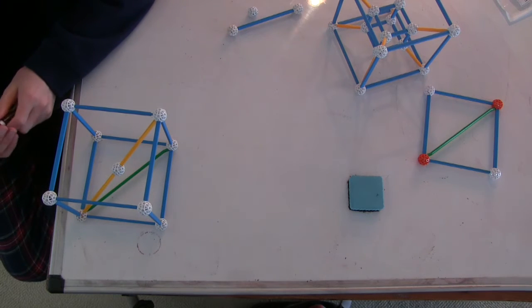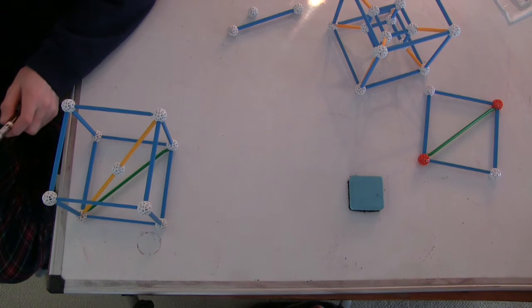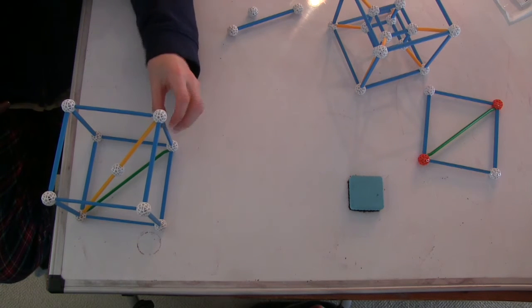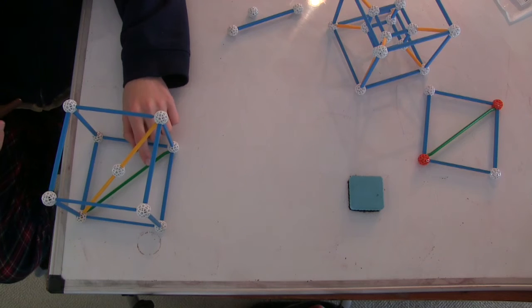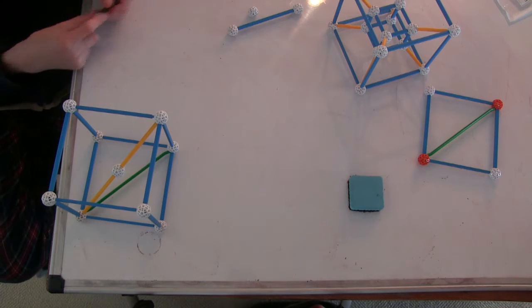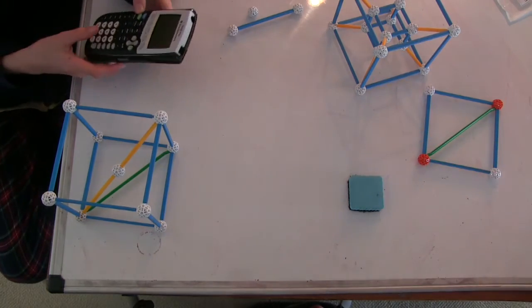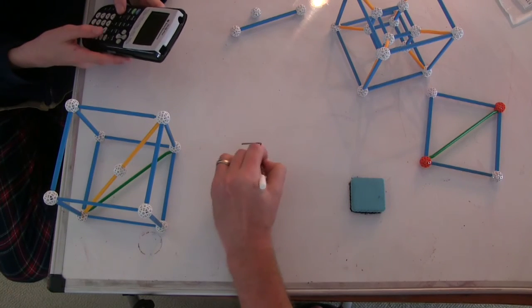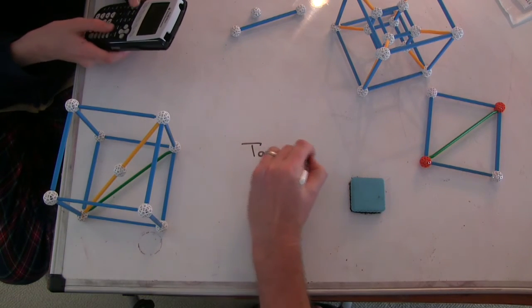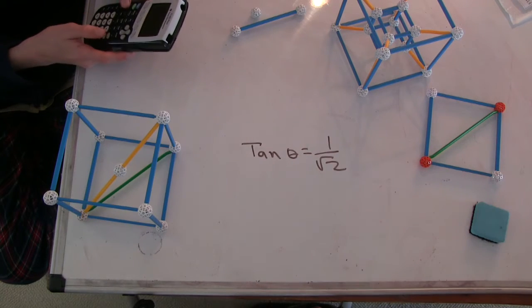So we can use the Pythagorean theorem to figure out that this is root three. Then we can use trig. I guess you could say tan of that - this is, again, one over root two. So it's one over root two. So why don't you do that on your calculator? Tan of the angle is one over root two, or root two over two, whatever you want. Go ahead.